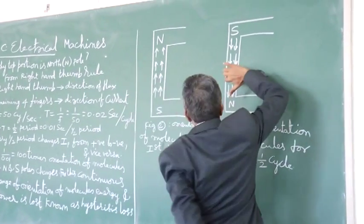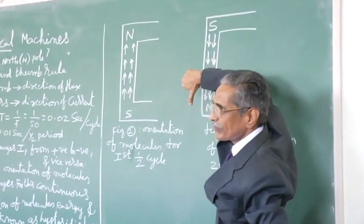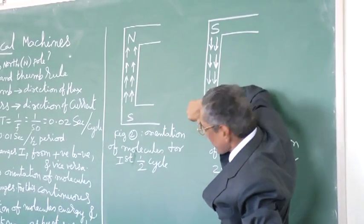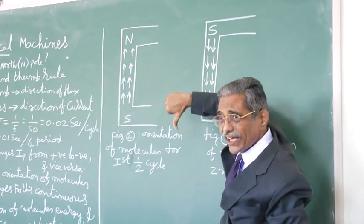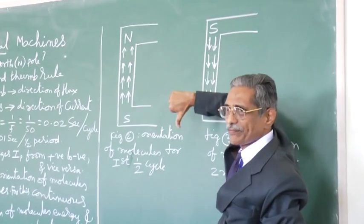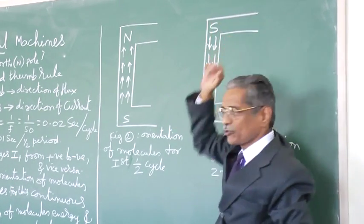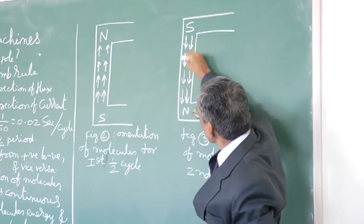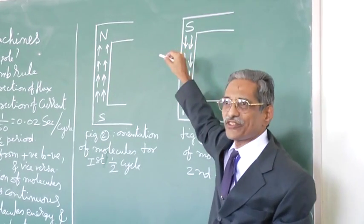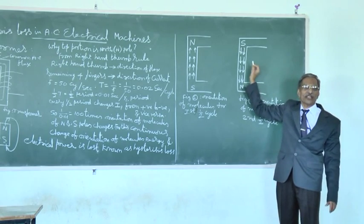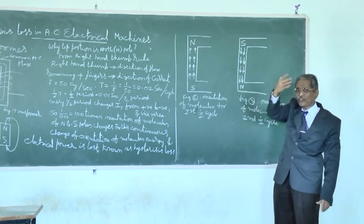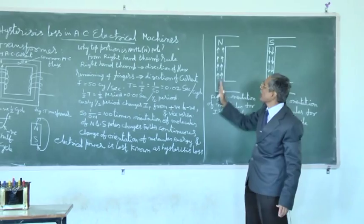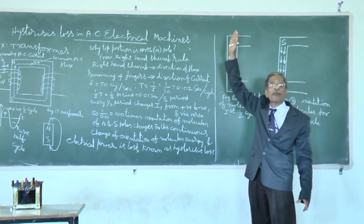Again, same thing. You just observe like this. So, bottom north pole because current direction has reversed. And top will be south pole. So, orientation of molecules comes downwards. It will be downwards during negative half cycle. Negative half cycle. Again positive half cycle comes. Again orientation will be upwards.